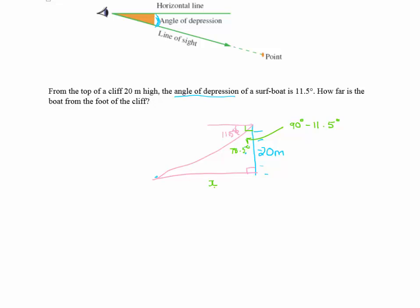So now I have a right angle triangle. And from my angle I've got an opposite and adjacent so I have tan. So I'm now going to say that tan 78.5 degrees equals opposite over adjacent.